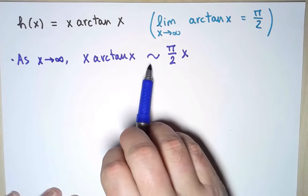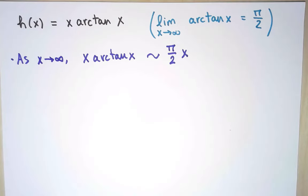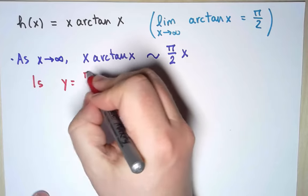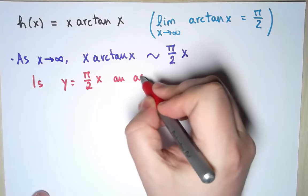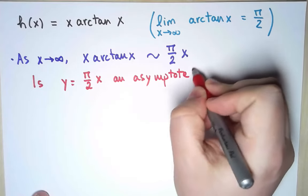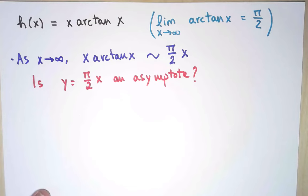So it suggests that my function is like a line, π over 2 times x. Perhaps that could be an asymptote. I'm not sure yet, but for now it's a conjecture. It's my candidate. I don't know if it's going to work, but let's try to prove it.